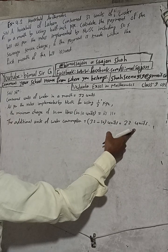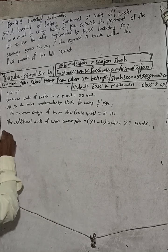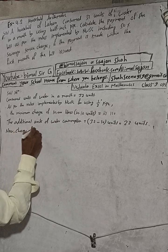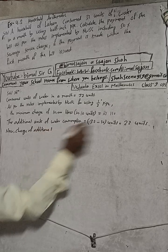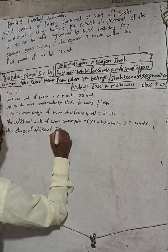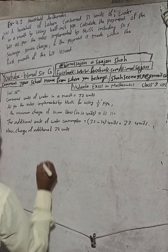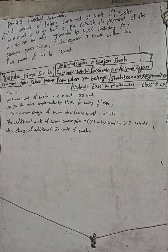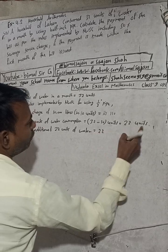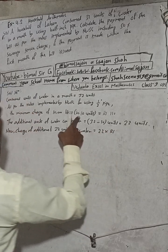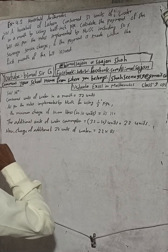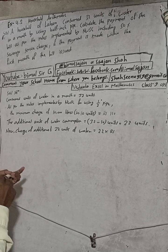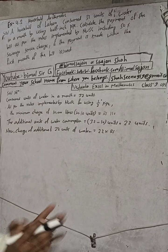Now, the charge of these additional 22 units of water — the charge of additional 22 units of water is equal to 22 units multiplied by the additional charge rate. If you see the additional charge in the book list, check the book properly — that list you have to remember.